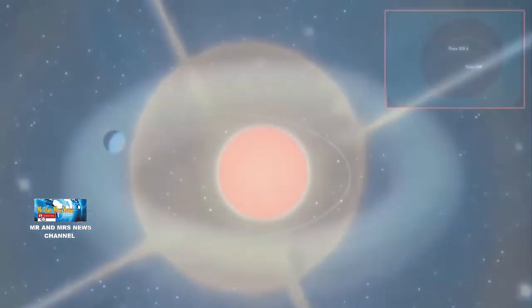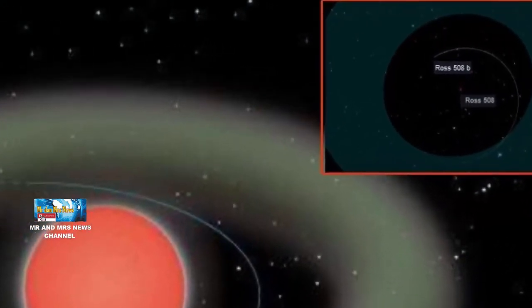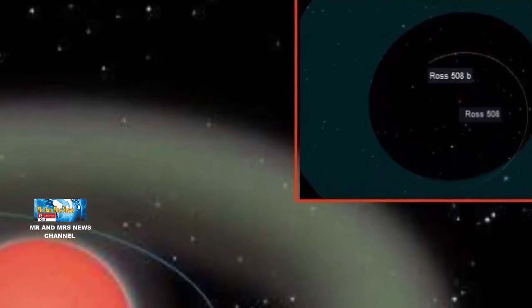Nah, begitulah penjelasan singkat terkait NASA menemukan bumi super yang dapat mendukung kehidupan, yaitu ROS-508D.